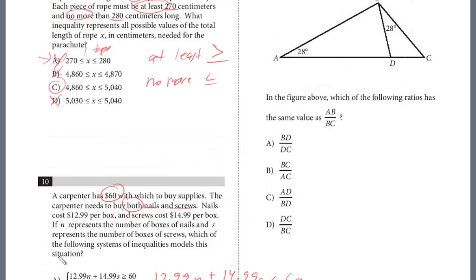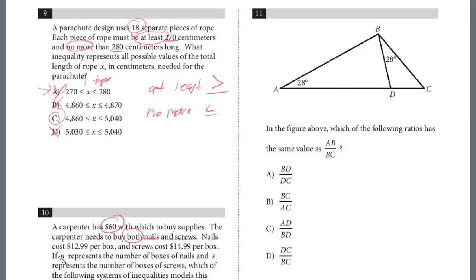All right, we'll take a look at number 11. In the figure above, which of the following ratios has the same value as AB over BC? All right, so AB is here and here's BC.